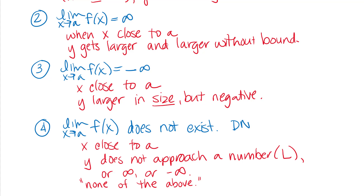Often when we write 'does not exist' we abbreviate it D-N-E. Our book usually writes it out, but in my videos and scratch work I'll often write DNE. It means does not exist, and that's a pretty common abbreviation you'll see.